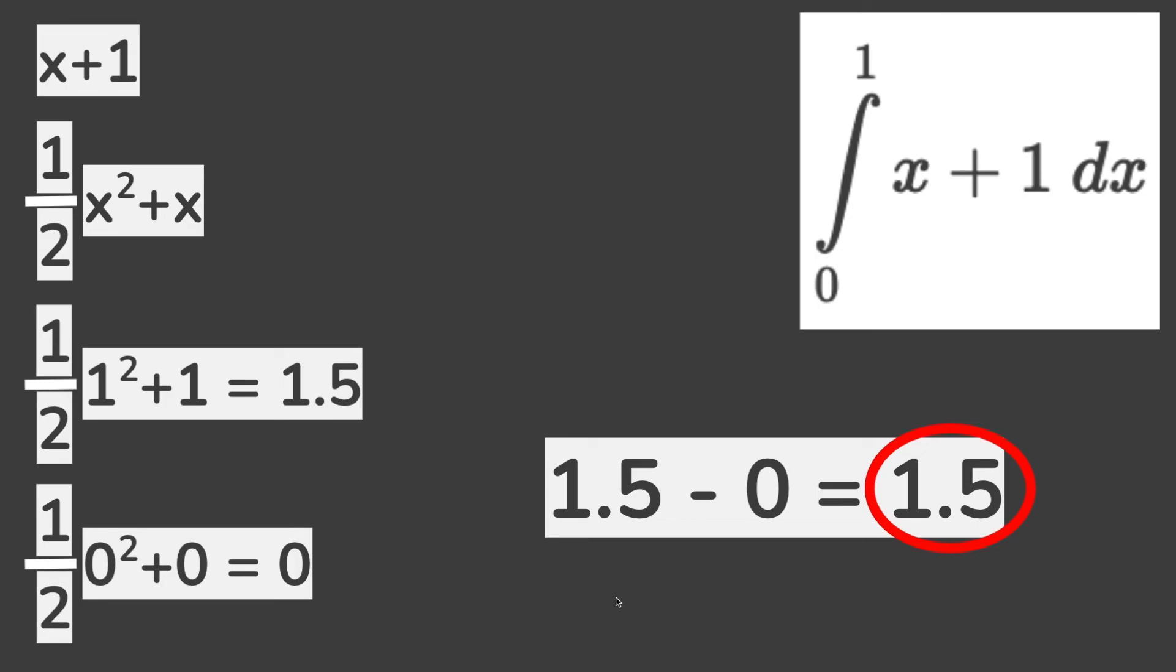Now, to find the integral of the area, we can just subtract the bigger one from the smaller one, in this case 1.5 minus 0, to get 1.5. And hopefully this helps you.